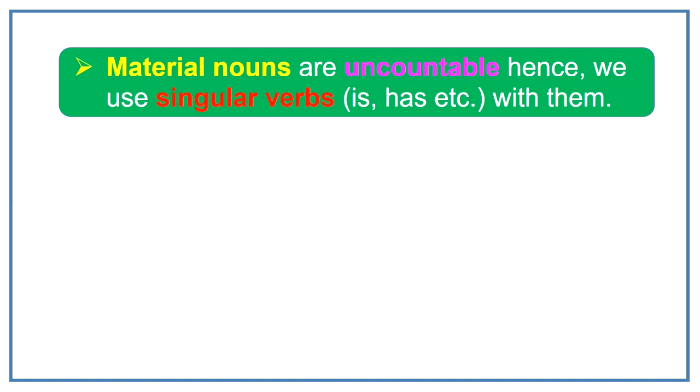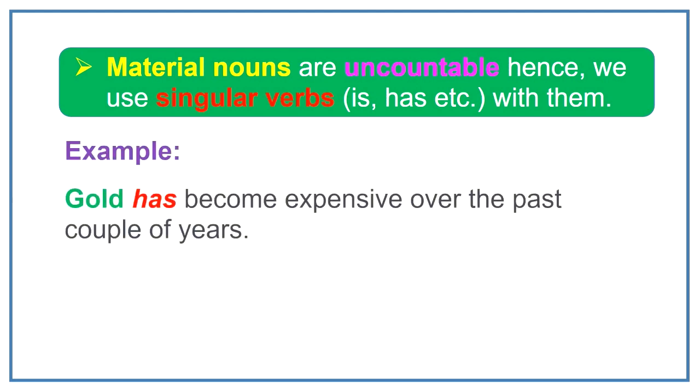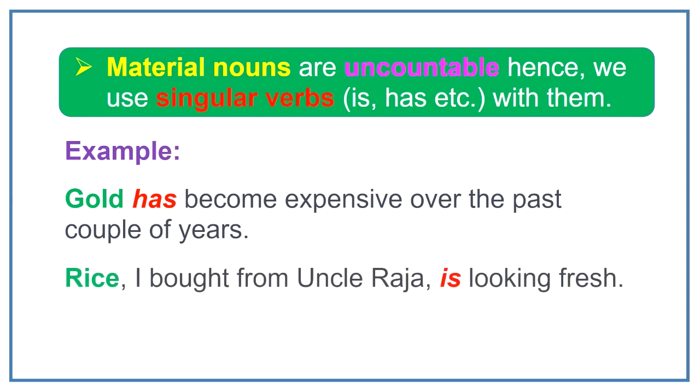Material nouns are uncountable hence we use singular verbs like is, has etc. with them. For example, gold has become expensive over the past couple of years. Rice I bought from uncle raja is looking fresh. Water is a basic necessity. Here we can see that gold, rice and water are uncountable nouns so we used has, is with them.